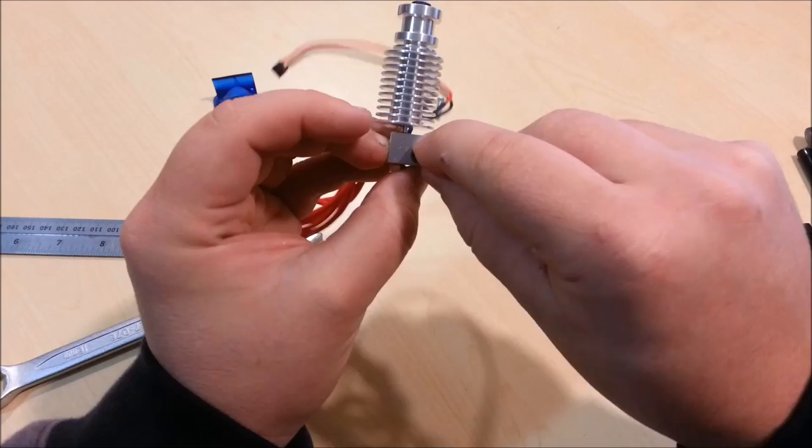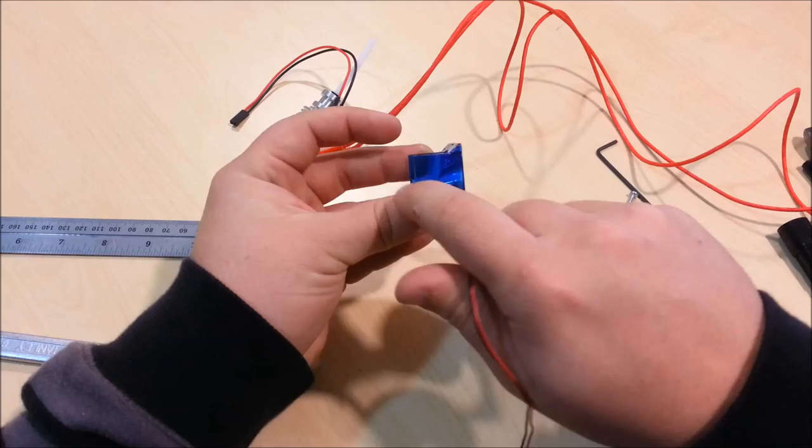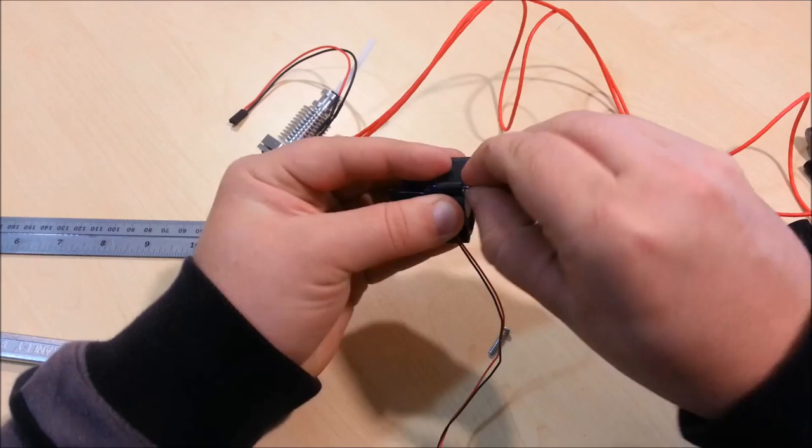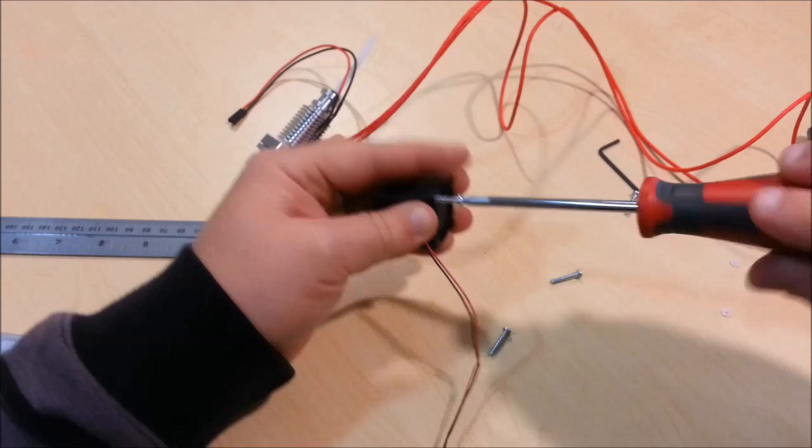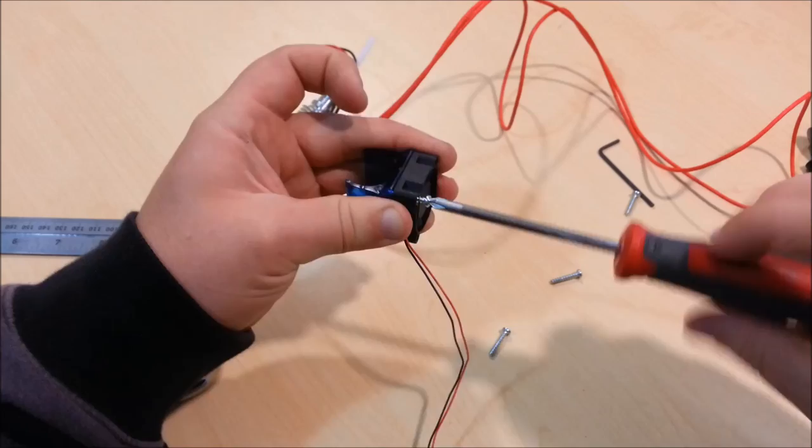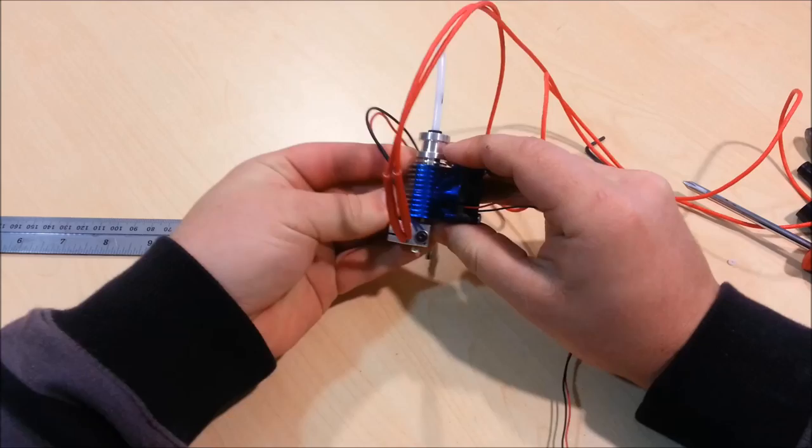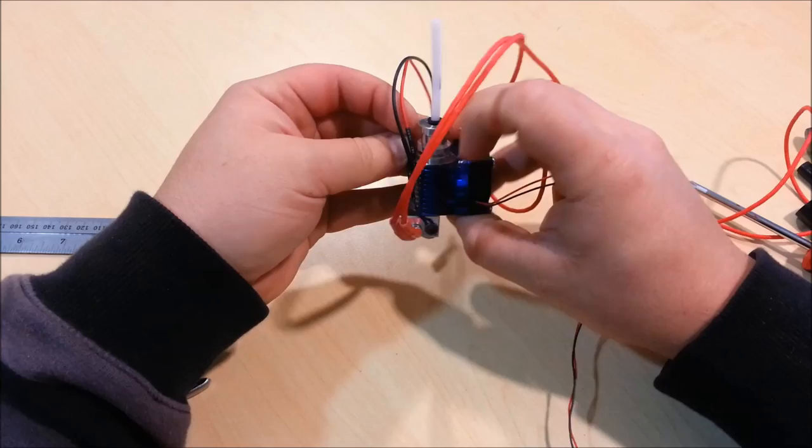Take the included fan and with this side on like that and the wires coming out that side as well. You want to mate it onto here. Take your included screws. Line them through there with a screwdriver and tighten that onto the shroud. With the wires coming out the same side as your thermistor and heater cartridge cables, you want to clip this over the heat sink and just make sure it's right over that bottom fin. Because that's what really ensures adequate cooling. You want a little step up there.